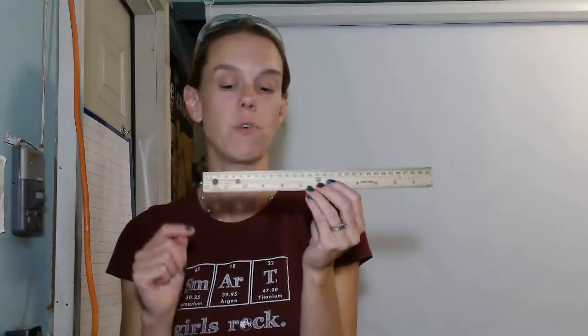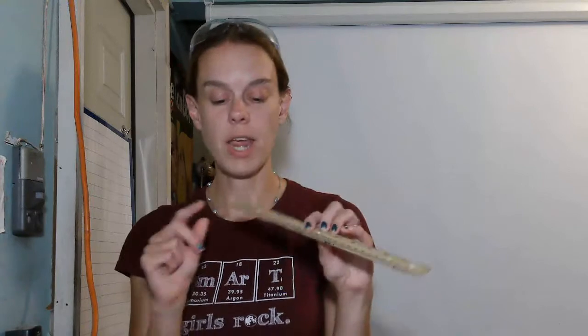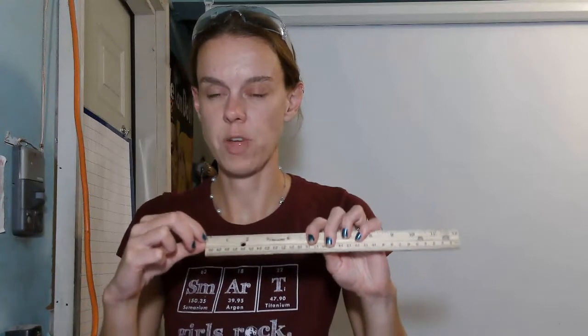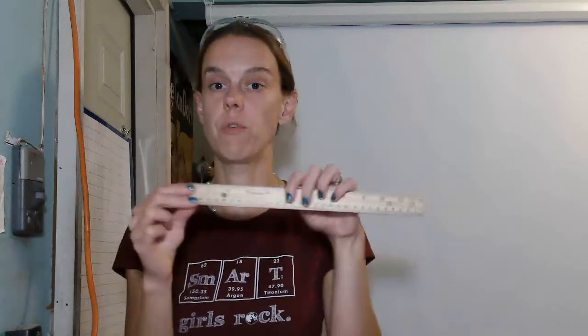Some things to remember about your ruler: your ruler might not start at 0 at the edge of your ruler. So when you're measuring things, make sure that you start measuring from where 0 is. You might have to move the ruler around on the paper or on the object that you're measuring.